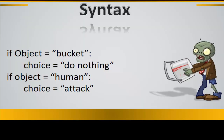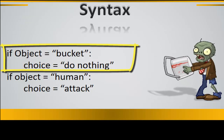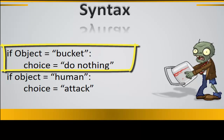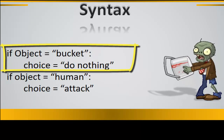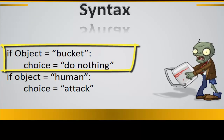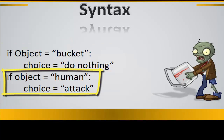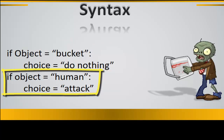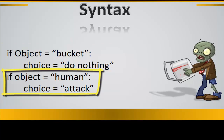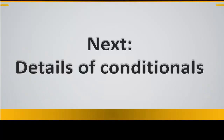The general syntax of such a program would be like: if the object is equal to a bucket, the choice would be equal to do nothing. However, if the object is equal to a human, the choice would be equal to attack the human. In the next coming lectures I'm going to talk about the details of conditional commands.